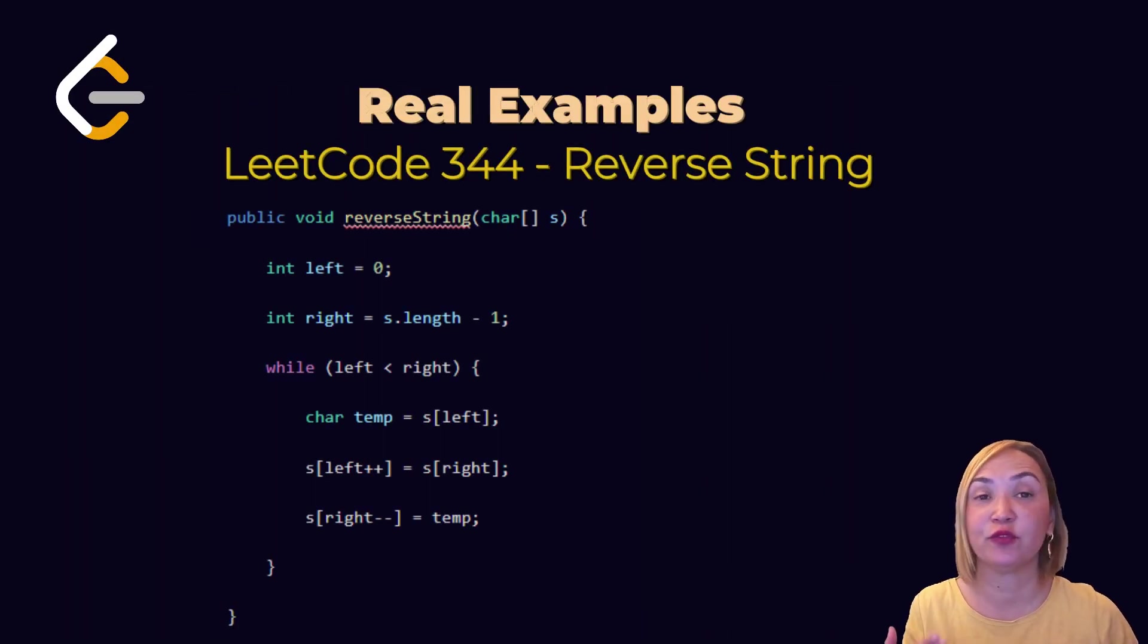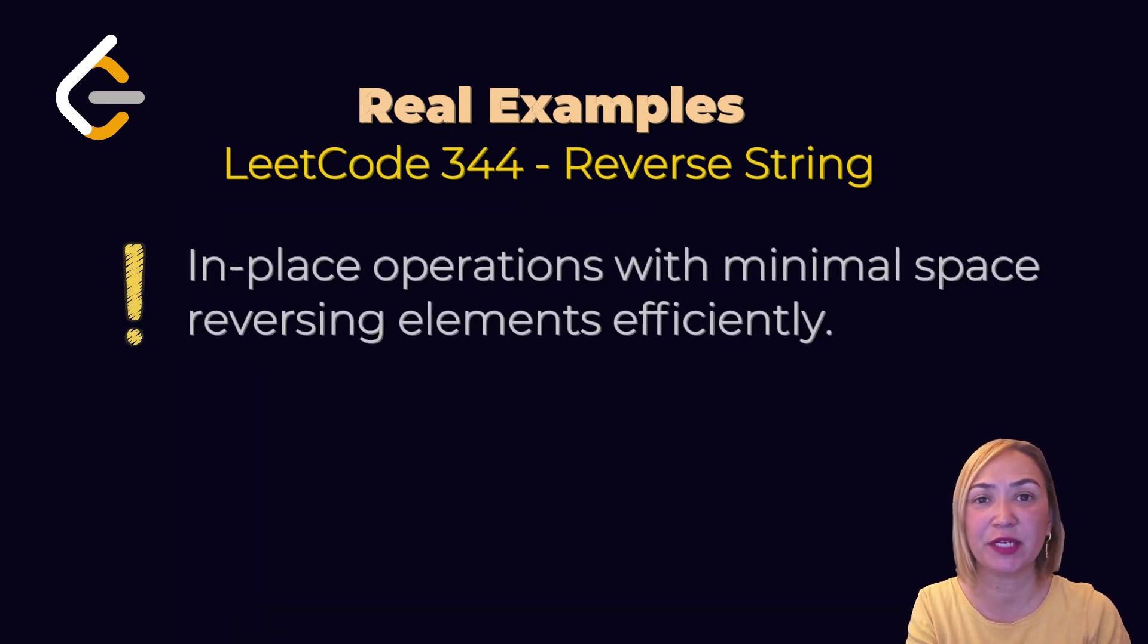Reverse string: Move two pointers inward, swap values. Define two pointers, left and right. While left less than right, swap the values and increment left and right. Swap values again and increment them again. When left and right meet in the middle or cross, the string is reversed. In-place operations with minimal space, reversing elements efficiently.